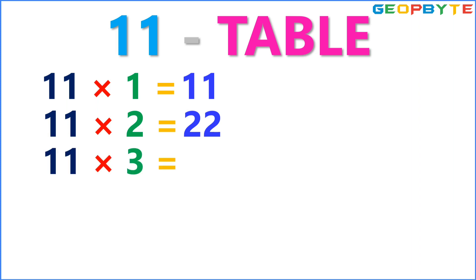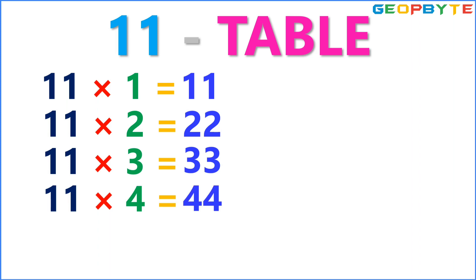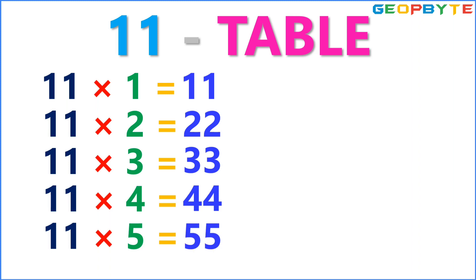11 threes are 33. 11 fours are 44. 11 fives are 55. 11 sixes are 66.